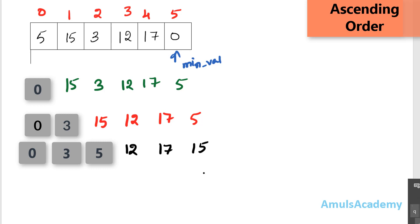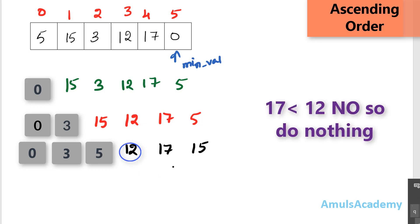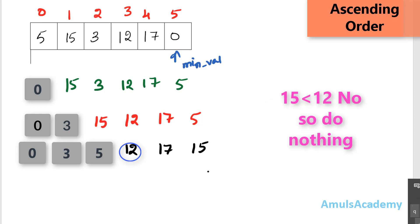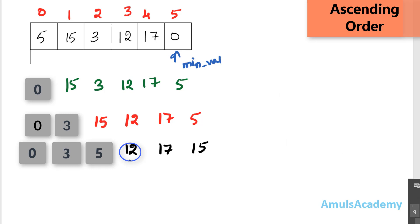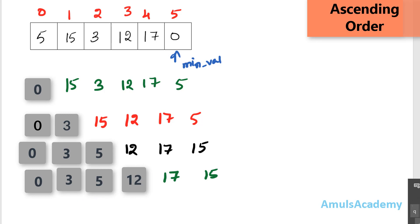We find the smallest value in 12, 17, 15. Take 12 as the minimum value, compare with 17 — no, 12 is smallest. Compare with 15 — no, 12 is still smallest, and it is already in the correct position, so we swap 12 with 12. After that step the list remains: 0, 3, 5, 12, 17, 15, but now 0, 3, 5, 12 are the sorted part and 17, 15 are the unsorted part.